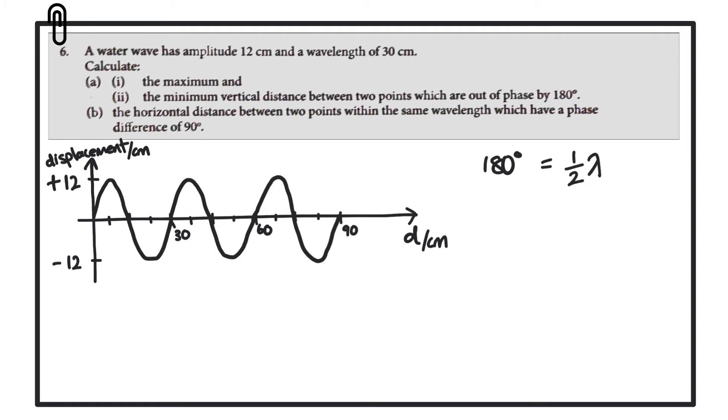What we want to do is find two points on the wave that are separated by half a wavelength, which in this case is going to be 15 centimeters, and work out the maximum and minimum values of the vertical separation.